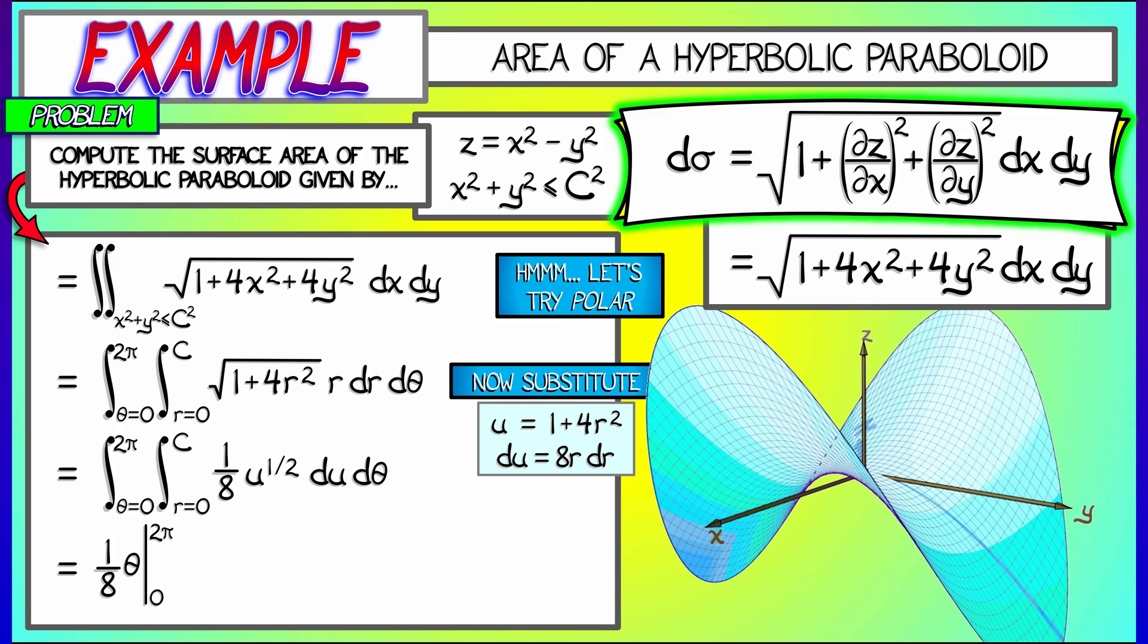Then, when I integrate u to the 1 half du, I get u to the 3 halves, all times 2 thirds. I substitute back in u equals 1 plus 4r squared, and then evaluate that as r goes from 0 to c.